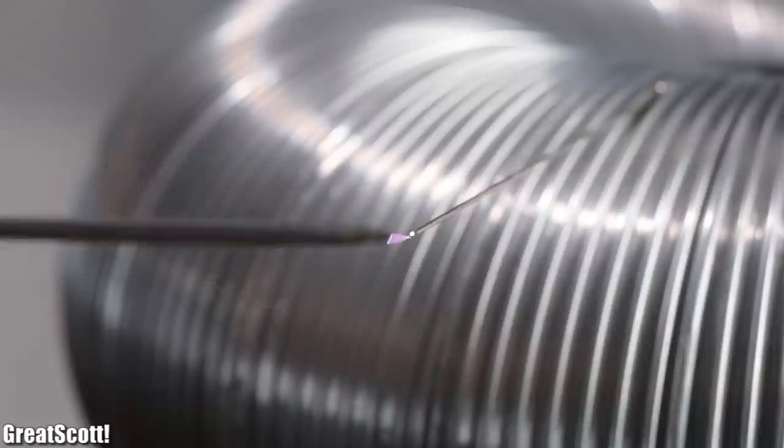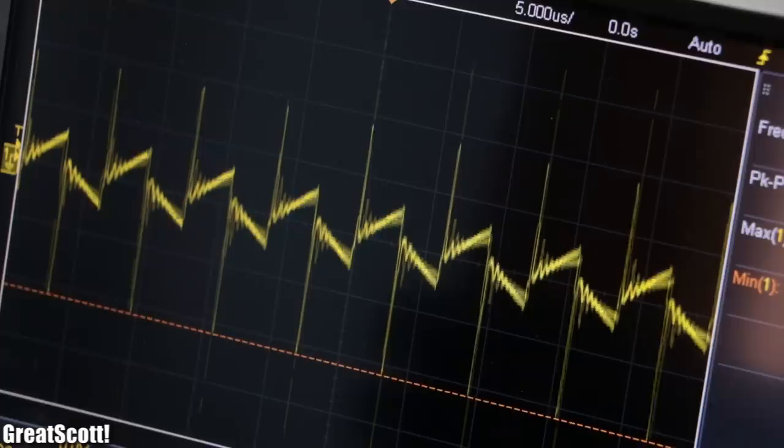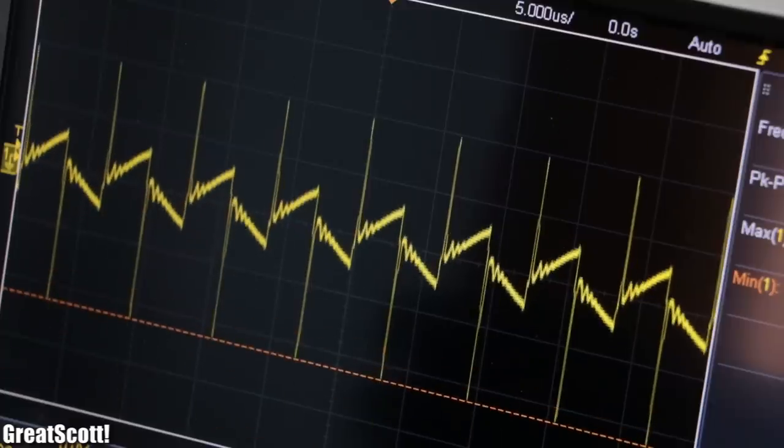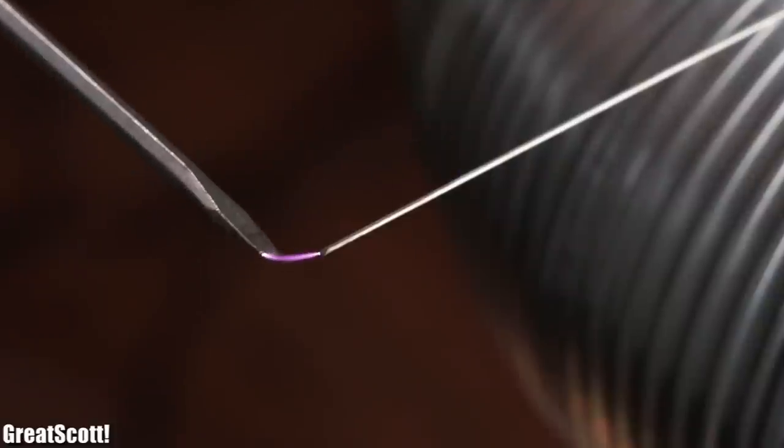The last challenge we have to face is that while creating arcs, the resonance frequency of the secondary changes a bit, which is not only visible on the oscilloscope but also debases the energy transfer.